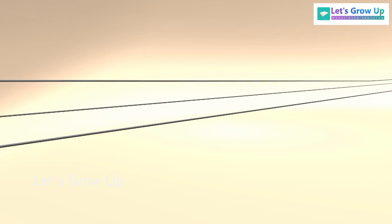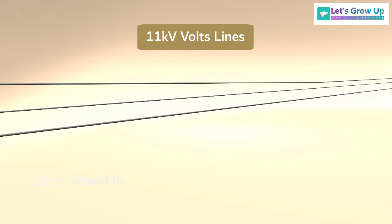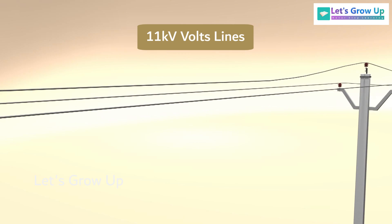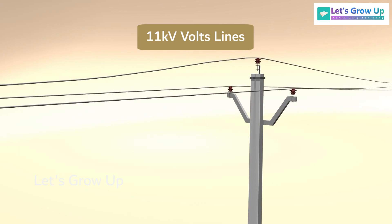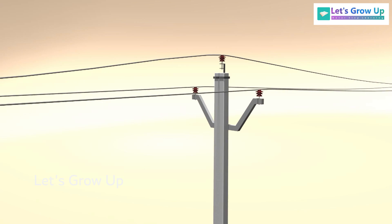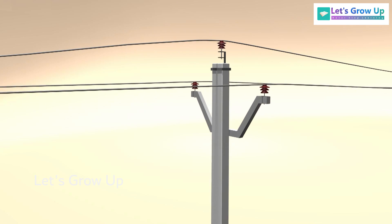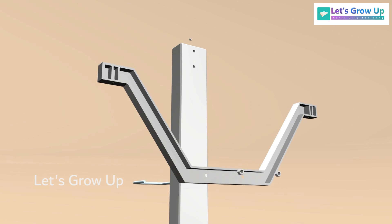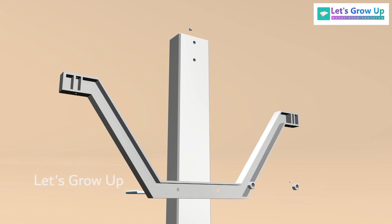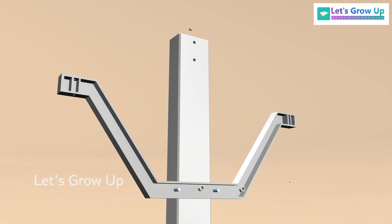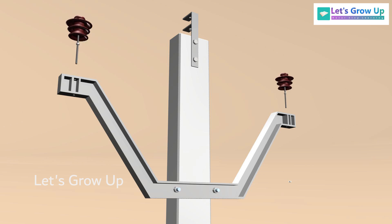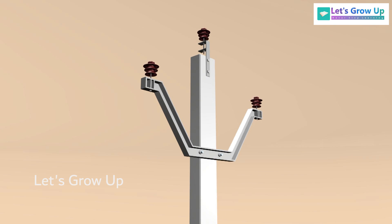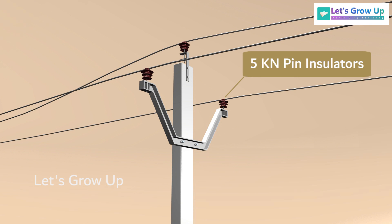These are the 11 kV wires. These high-voltage transmission lines are transmitted over long distances, supported by towers or poles. The V-shaped cross arm is the horizontal structure attached to the pole that supports the electrical insulator and conductor. These are 5 kN pin insulators.